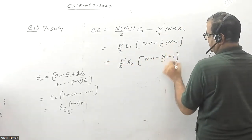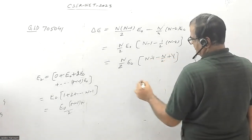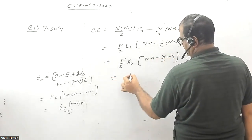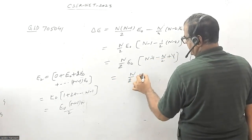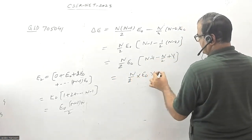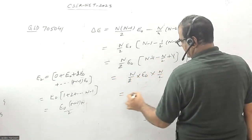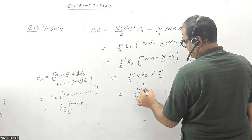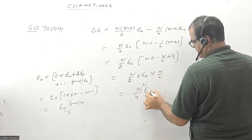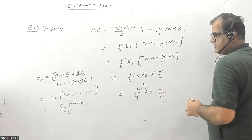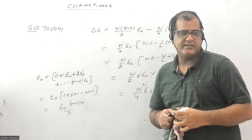This becomes N by 2 times E0 times (N minus 1 minus N by 2 plus 1). This one cancels out. So you have N by 2 times E0 into N by 2, that becomes N squared over 4 times E0. This is the change in energy and this is the correct answer for this question.